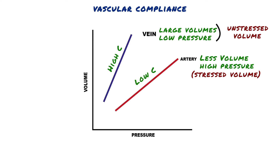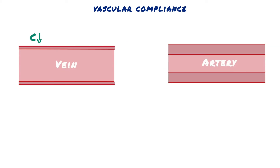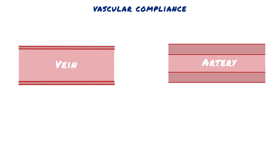Changes in compliance of the veins cause redistribution of blood between the veins and the arteries. For example, if the compliance of the veins decreases, there is a decrease in the volume the veins can hold and, consequently, a shift of blood from the veins to the arteries. If the compliance of the veins increases, there is an increase in the blood volume the veins can hold and, consequently, a shift of blood from the arteries to the veins.